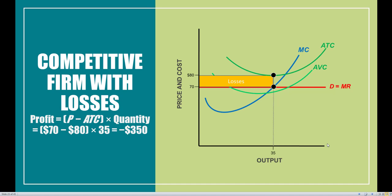The firm in this particular scenario would want to go ahead and continue to open and continue its operations even though it's going to have losses, because its losses are going to be much lower compared to if it actually did shut down. Remember that there's going to be some type of fixed cost presence within the firm itself. With a price of $70, you notice it's greater than the average variable cost — the firm is still going to be able to pay all of its variable costs: its workers, utilities, and raw materials. The losses are essentially stemming from the fixed cost.